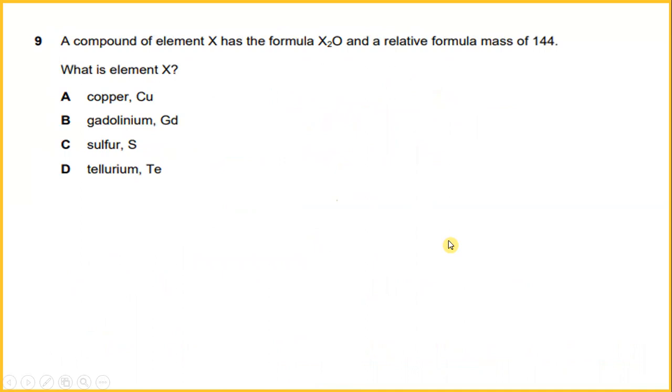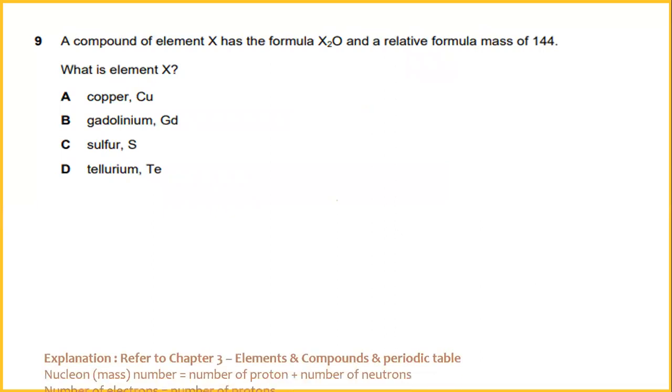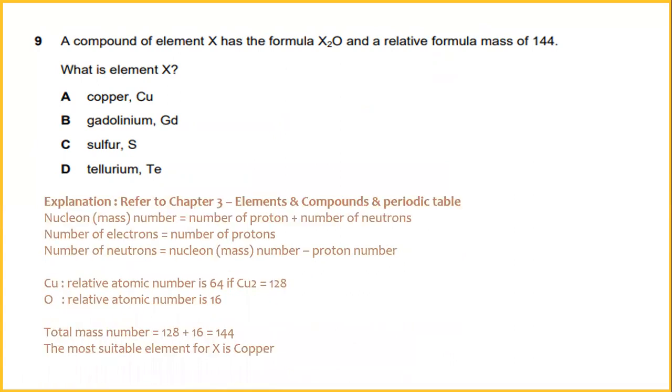Number nine, a compound of element X has a formula X2O and a relative formula mass of 144. What is element X? The explanation refers to chapter three, elements and compound and periodic table. If you see X2O means that Cu2O. Cu relative atomic number is 64. If Cu2 means 128. 64 multiplied by 2 equals 128. And oxygen relative atomic number is 16. To get the total mass number is 128 plus 16 equals 144. The most suitable element for X is copper.